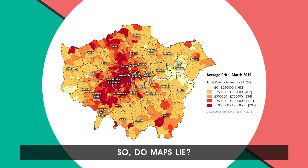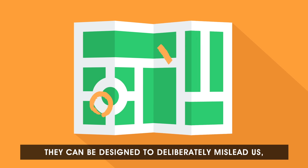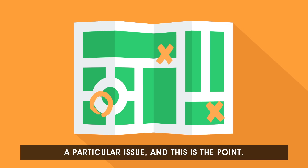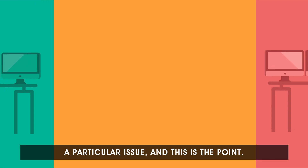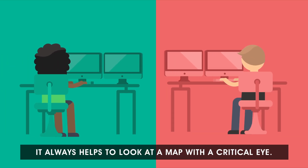So do maps lie? Well, kind of. They can be designed to deliberately mislead us or influence us one way or another about a particular issue — and this is the point. Maps aren't neutral. Map makers can lie. It always helps to look at a map with a critical eye.